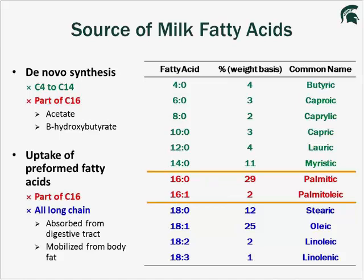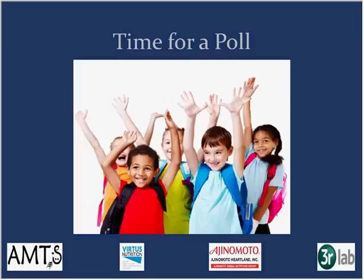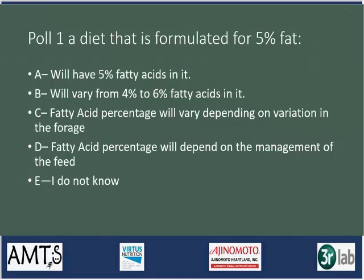Considering milk fatty acids, there are two sources that contribute to milk fat. De novo fatty acids are our short and medium chain fatty acids — butyrate all the way up to palmitic acid — produced directly in the mammary gland from chain elongation of acetate and butyrate. Then we have preformed fatty acids: the 16-carbon fatty acids and all 18-carbon and longer. The 16-carbon fatty acids are the only ones that can come either from de novo or from preformed fatty acids. That's the introductory biology background, and after the poll we'll move to more specifics on fatty acid supplementation.